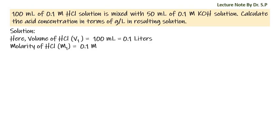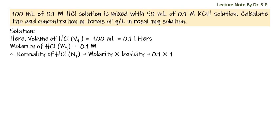Given molarity of hydrochloric acid M1 is equal to 0.1 molar. We have to convert molarity into normality first. Therefore, normality of hydrochloric acid N1 is equal to molarity into basicity, that is equal to 0.1 into 1. The basicity of hydrochloric acid is 1 because HCl is a monobasic acid and has only one replaceable hydrogen. Hence, normality of hydrochloric acid is 0.1 N.